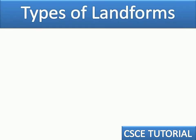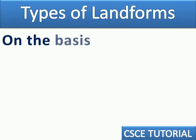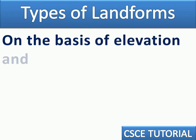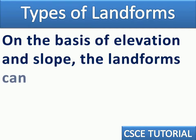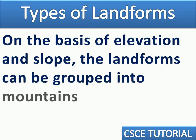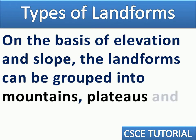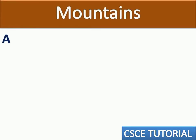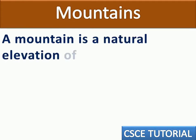Types of landforms: On the basis of elevation and slope, landforms can be grouped into three categories — mountains, plateaus, and plains. First, we will read about mountains. A mountain is a natural elevation of the Earth's surface.